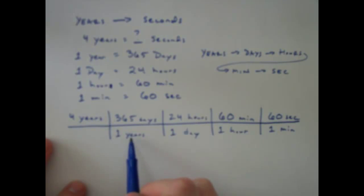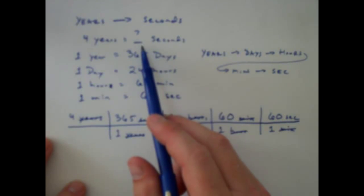So I'm going to have years divided by years. Those cancel. Days divided by days. Those cancel. Hours divided by hours. Those cancel. Minutes divided by minutes. Those cancel. If you look at my units, all I'm left with is seconds. That's what I was trying to get to right over here with seconds.